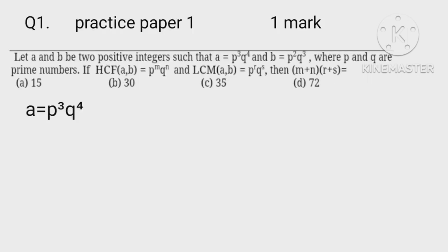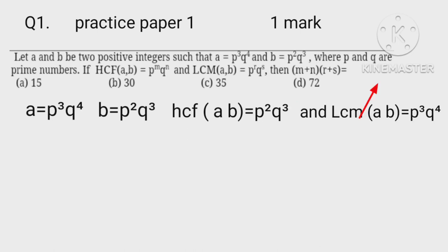In this question, a equals p cubed q to the power of 4 and b equals p squared q cubed. HCF of a, b equals p squared q cubed and LCM of a, b equals p cubed q to the power of 4. But HCF of a, b equals p to the power of m, q to the power of n.